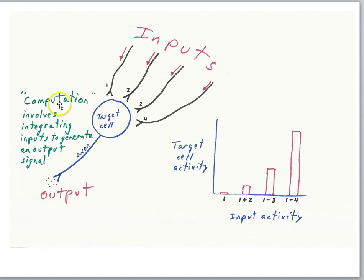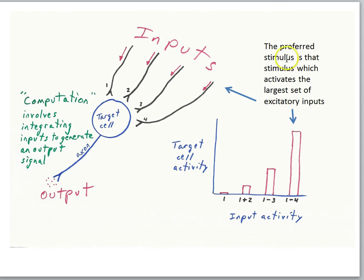We can think of this as a form of computation as well. It involves integrating the inputs to generate an output signal, and depending on the pattern of inputs, the output signal is different. Another way to think about the preferred stimulus for this target cell is that the preferred stimulus is that stimulus which activates the largest set of those inputs, and that's going to cause the maximal response.